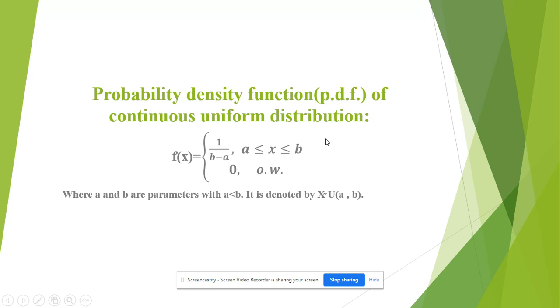In this, we shall see the probability density function of a continuous uniform distribution which is denoted by pdf and it is given by f(x) equal to 1 upon b minus a for x lies between a to b and 0 otherwise, where a and b are parameters with a is always less than b. It is denoted by X follow U(a, b).